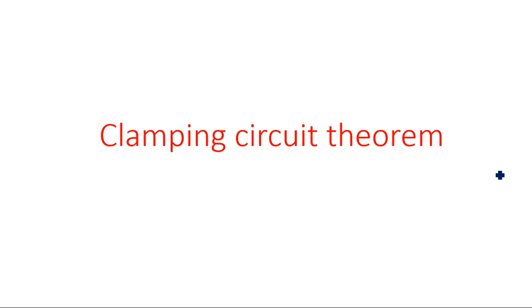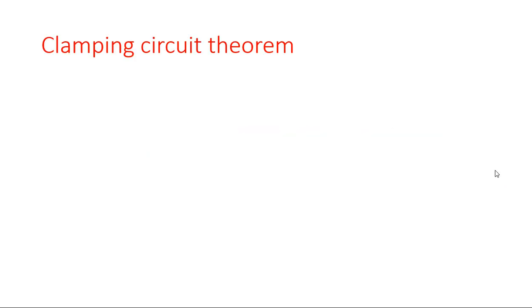In this video you are going to learn about the clamping circuit theorem. A clamper is a DC restorer, DC inserter, or level shifter — it simply shifts any sinusoidal or other input signal either to the positive side or negative side. We have seen various types of clamping circuits: positive clamper, negative clamper, and different circuits, and all of them were treated as ideal clamping circuits.